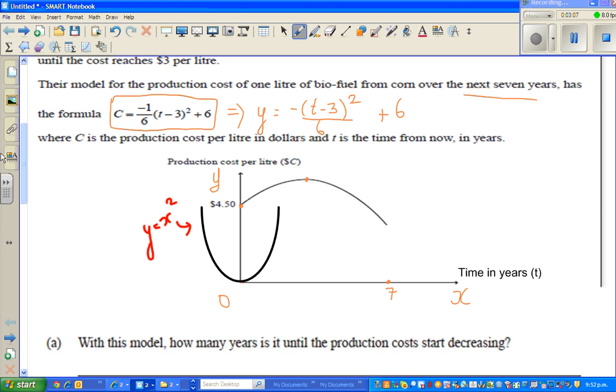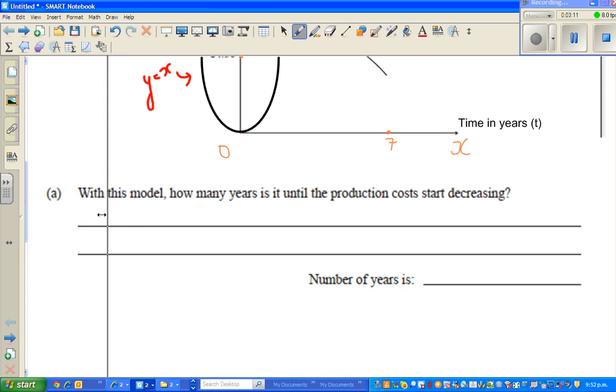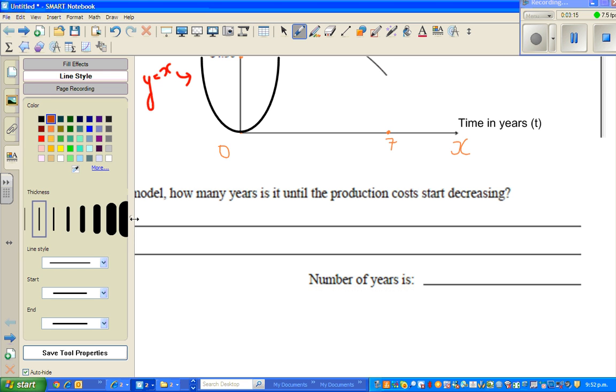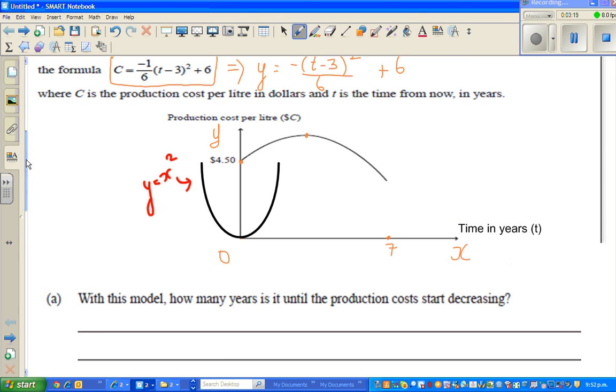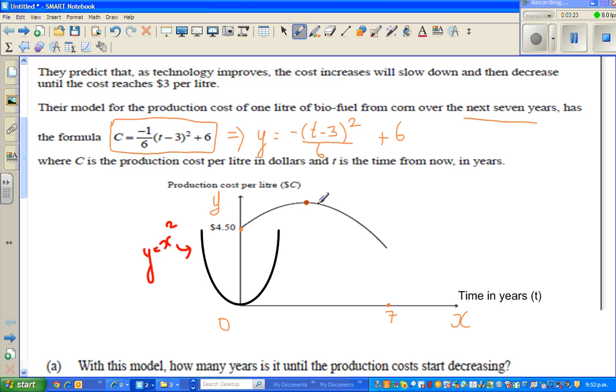Then it has moved 3 to the right and 6 up. So this point, this point has to be 3 comma 6. So what do I mean? This point has to be 3 and this point has to be 6. We will check this later on. So here, this point is, I'm saying this point would be 3 and this point is 6. So the vertex is 3 comma 6.